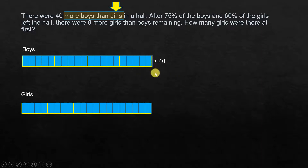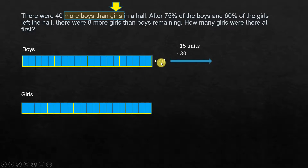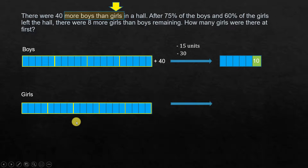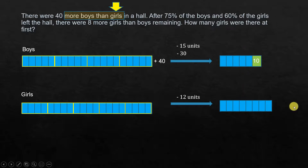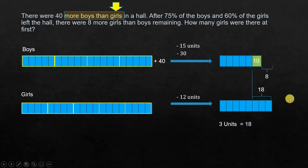75%, which is 3/4, means 15 units left for boys, leaving 5 units plus 10 from the known quantity. For girls, 60% means 12 units left, leaving 8 units. There are 8 more girls than boys remaining, so the gap of 3 units equals 10 plus 8, which is 18. Therefore 1 unit is 6, and the total number of girls is 20 units, giving 20 times 6 equals 120.